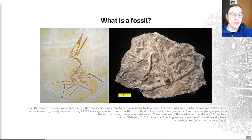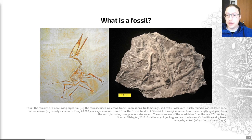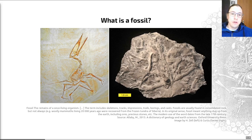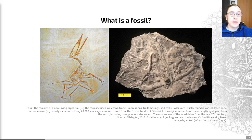It makes sense to finish this part of the lecture by highlighting what a fossil actually is. A fossil is the remains of a once-living organism. This can include skeletons, tracks, impressions, trails, borings, and casts — a very wide range of different forms included under this term. It also includes trace fossils: the remnants of animal behavior in the sedimentary record, rather than the actual bits of an animal itself.